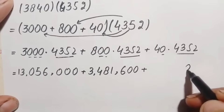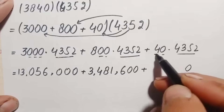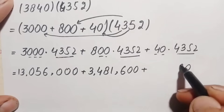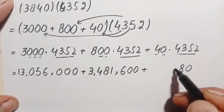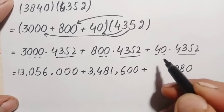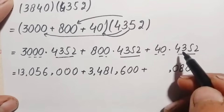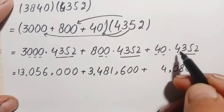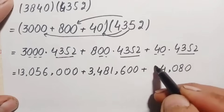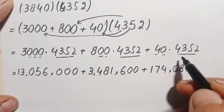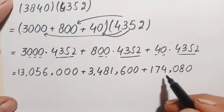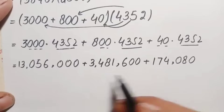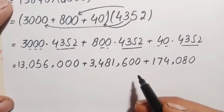Then, 40 × 4352: one trailing zero, then 4 × 4352 = 4×2=8, 4×5=20 (carry 2), 4×3=12+2=14 (carry 1), 4×4=16+1=17 — giving 17,408. So 40 × 4352 = 174,080.